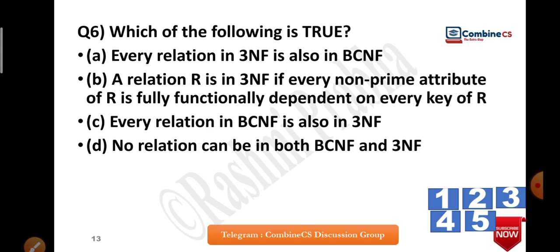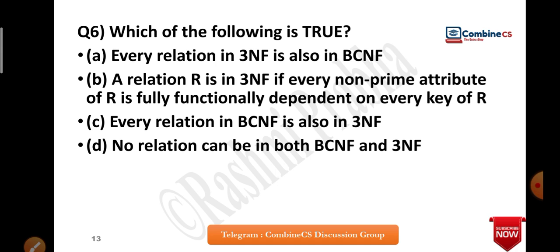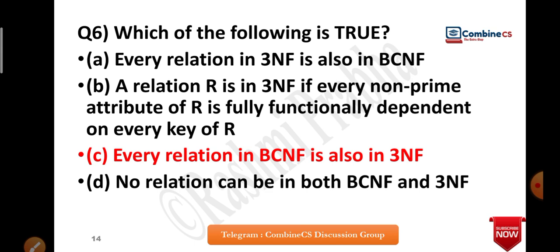Which is the true statement? This question has been asked many times. The options are: every relation in 3NF is also in BCNF; a relation R is in 3NF if every non-prime attribute is fully functionally dependent; every relation in BCNF is in 3NF; no relation can be both BCNF and 3NF. The answer is option 3: every relation in BCNF is in 3NF. Remember: BCNF is the strongest, then 3NF, then 2NF, then 1NF.